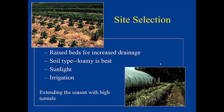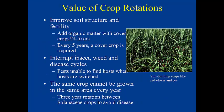Why do crop rotations? They help improve soil structure and fertility, add organic matter, and in the case of a legume, fix nitrogen in your soil. For example, red clover as a cover crop adds nitrogen. Every five years a cover crop is required for intensive commercial vegetable production, though it's good to put one in at home too. Generally put in rye and white clover. Crop rotations also interrupt insect, weed, and disease cycles — changing the host plant confuses pests. For solanaceous crops like potatoes and eggplants, rotate out of them for at least three years to avoid disease.